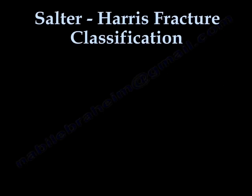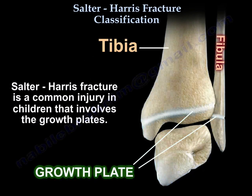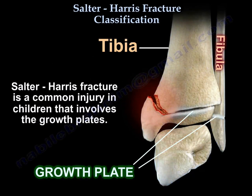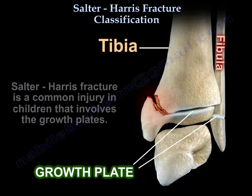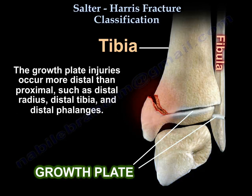Salter-Harris fracture is a common injury in children that involves the growth plates. Here is the tibia and the fibula, and here are the growth plates, and here is an example of a fracture in the growth plate. 15% of all fractures in children involves the growth plate. It occurs more in boys than girls. Growth plate injuries occur more distal than proximal, such as distal radius, distal tibia, and distal phalanges.